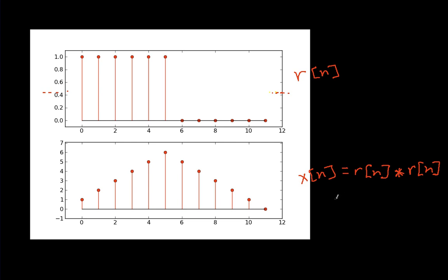So, the expression for x of n is the summation l going from 0 to capital N minus 1. You'll notice capital N for both of these waveforms is 12. For the square wave and p, the number of non-zero samples is 6. So, this will be r of l, r of n minus l.